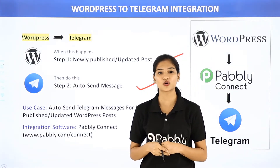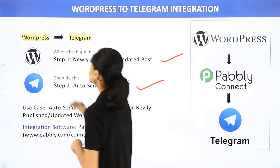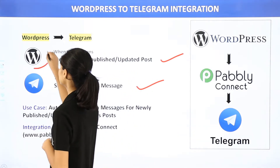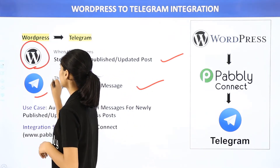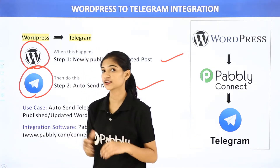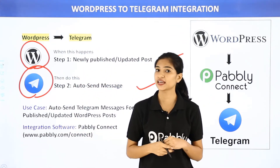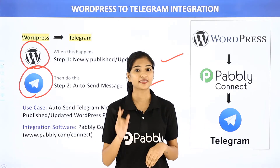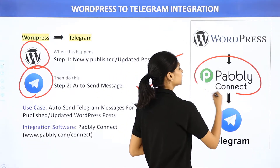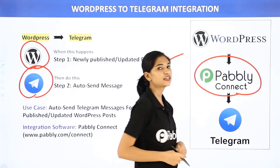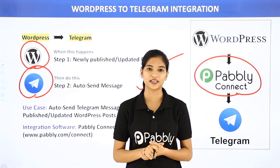Let us know what these two software applications are all about. WordPress is a popular website builder, whereas Telegram is a messaging app. The issue here is that WordPress and Telegram don't have any integration between them, and that is why we are going to use Pabbly Connect, a third-party application software to integrate both these software applications.